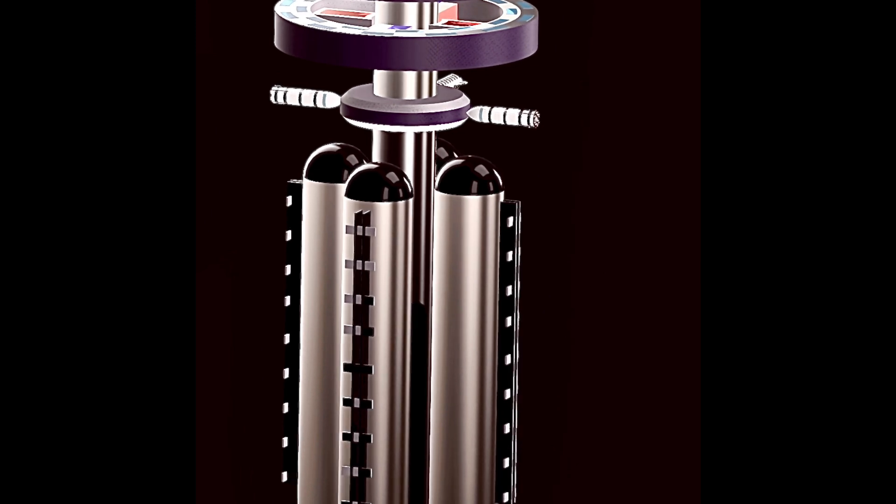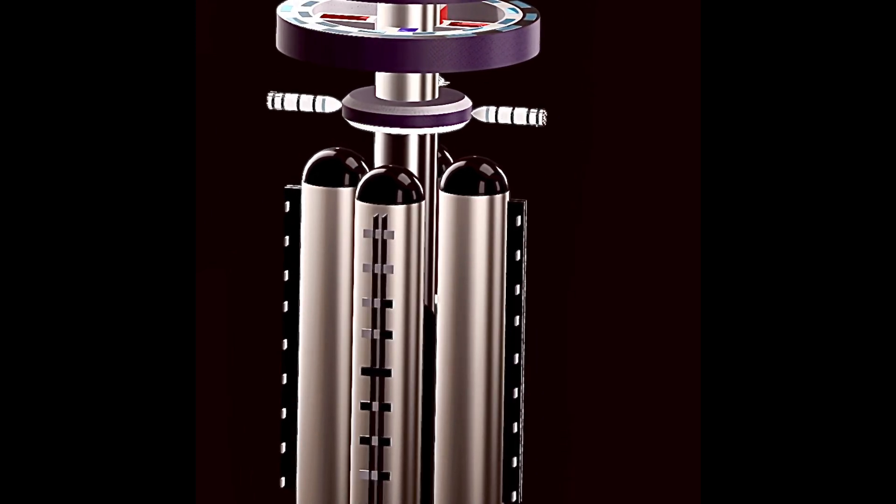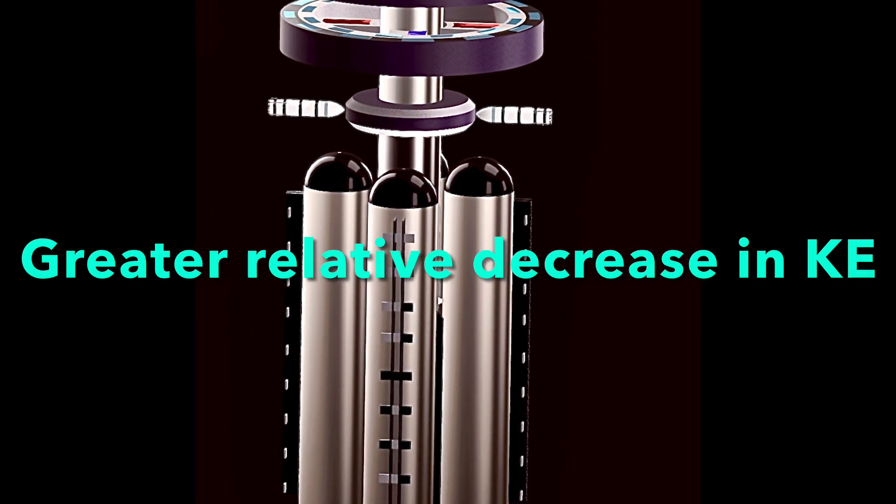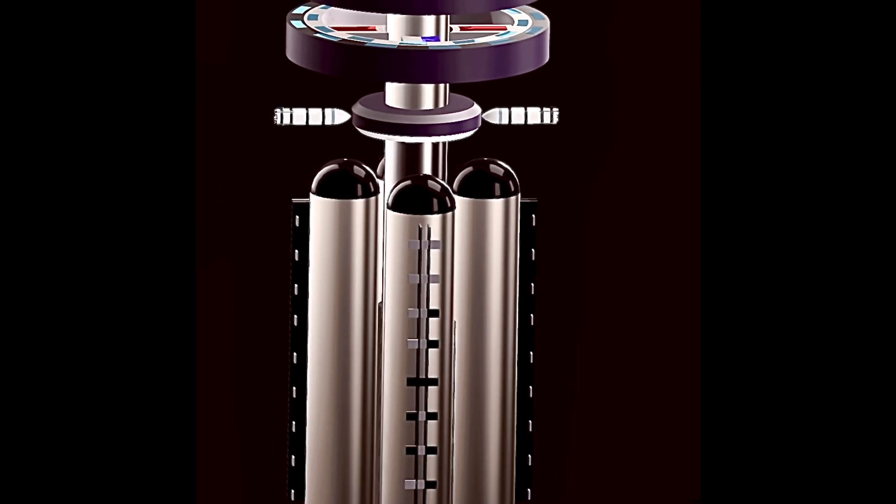So any decrease in velocity of fuel for a given delta v, when it's moving fast, it will be a greater decrease in kinetic energy compared to apogee when it's moving much slower. So this means there's a far greater amount of energy that can be transferred to the ship. This means it doesn't defy conservation of energy.